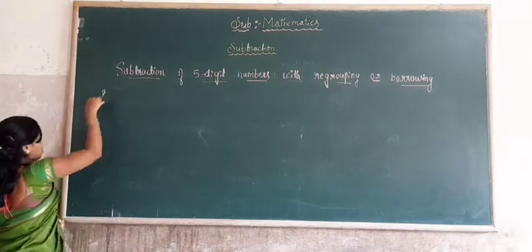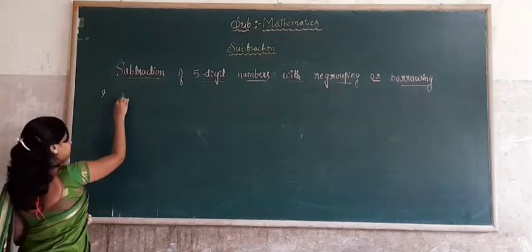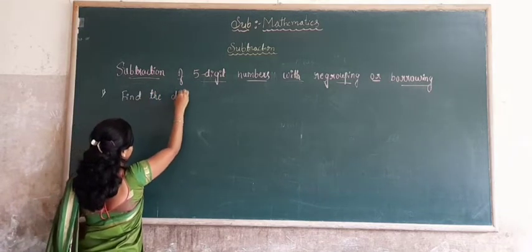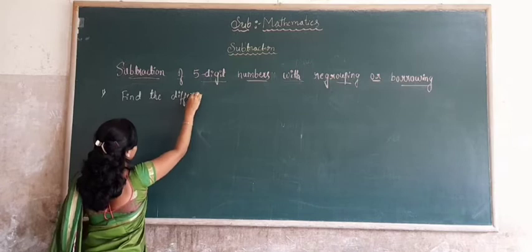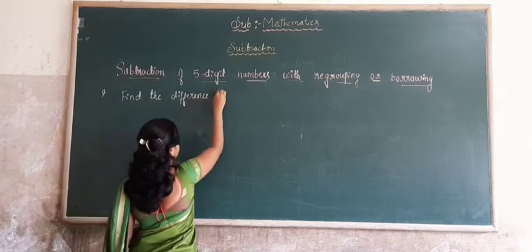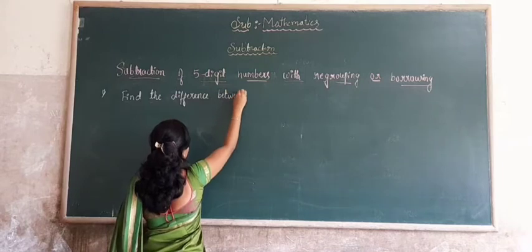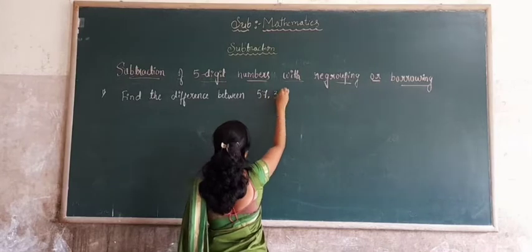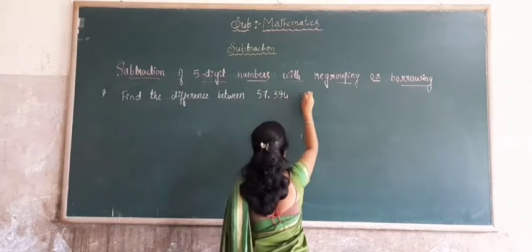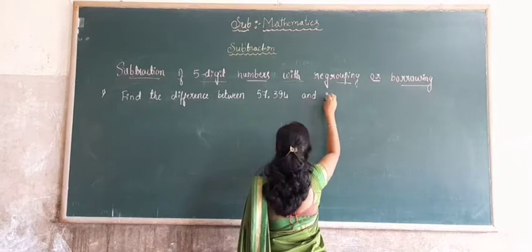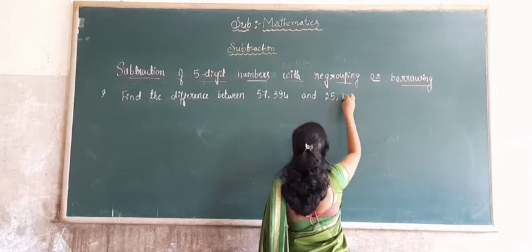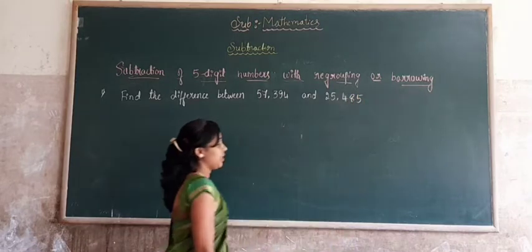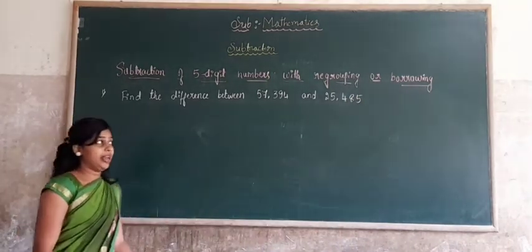First one, find the difference between 57,394 and 25,485. First we write the given numbers in the place value chart.